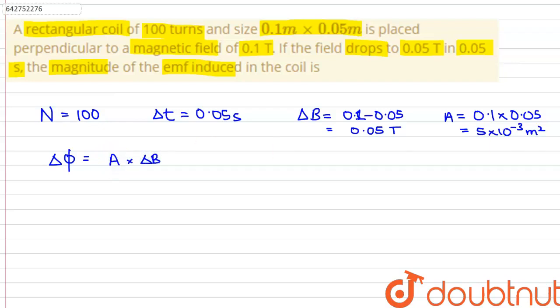Substituting the values of A and delta B, we can rewrite this as 5 into 10 to the power minus 3 into 0.05, and this comes out to be 2.5 into 10 to the power minus 4 weber meter squared.